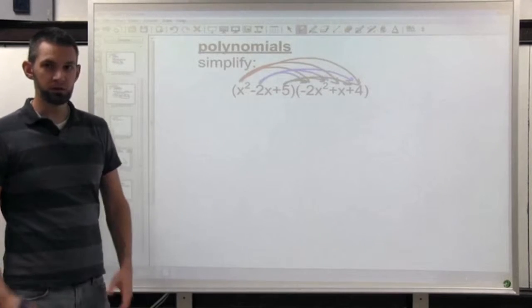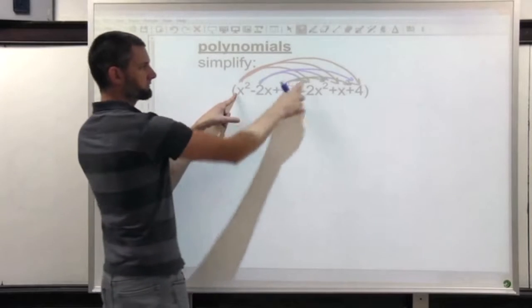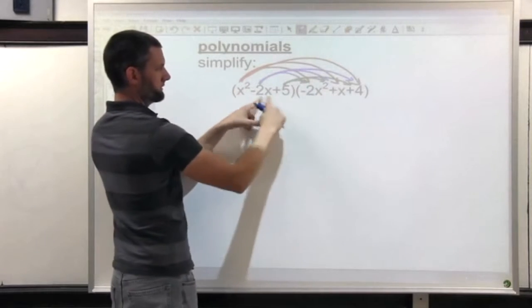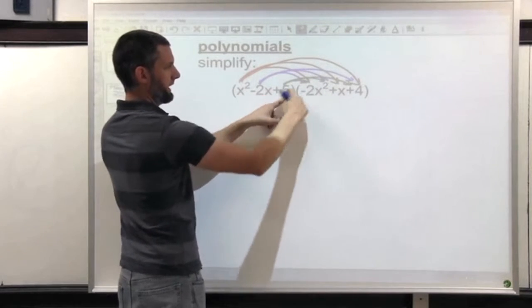First of all, here's what the distributing looks like drawn out. x squared gets distributed to all three, negative 2x gets distributed, and 5.